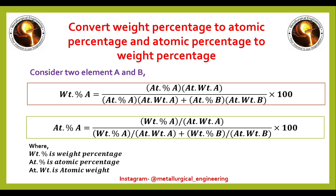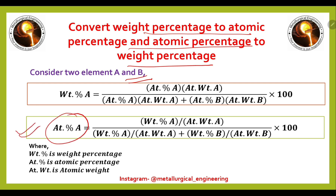This is the fundamental formula for converting weight percentage to atomic percent and atomic percent to weight percent. Considering two elements A and B: to convert from weight percent to atomic percent we use one formula, and to convert from atomic percent to weight percent, weight percent of element A equals atomic percent of A times atomic weight of A, divided by the sum of atomic percent A times atomic weight A plus atomic percent B times atomic weight B.